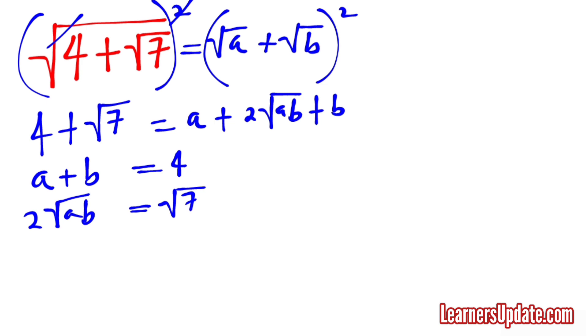This last equation can be written as root 4AB is equal to root 7 so that I can square both sides to get rid of that square root. So I have 4AB is equal to 7.